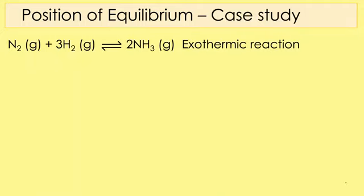Let's look at a case study — the Haber process, which is quite a famous reversible reaction. Here nitrogen reacts with hydrogen to give ammonia, and this is an exothermic reaction. Applying the rules: it involves gases, so pressure matters. If I increase the pressure, that favours the side with the fewest moles of gas. The left-hand side has 1 + 3 = four moles of gas and the right-hand side has two moles of gas. So increasing pressure shifts the position of equilibrium to the right.